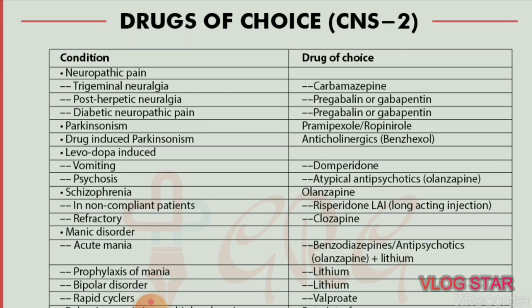Next is neuropathic pain. Trigeminal neuralgia — drug of choice is carbamazepine. Post-herpetic neuralgia — drug of choice is pregabalin or gabapentin. Diabetic neuropathic pain — drug of choice is pregabalin or gabapentin.